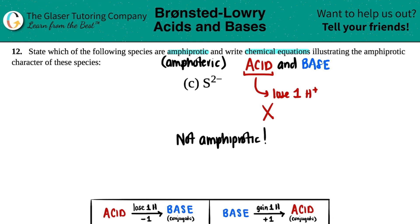Since S²⁻ is not amphiprotic and can't act as an acid, we don't have to write any chemical equations. That's the answer. Hopefully this helped — let me know in the comments, thank you so much for viewing the video, and I'm looking forward to helping you in later lessons.